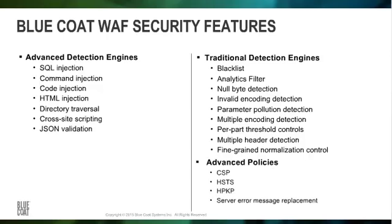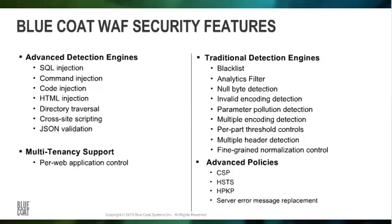With the CPL framework, we can offer advanced policies in addition to the provided engines and capabilities. For example, you could write policy to enable content security policy, which is delivered by the browser in a header field and executed by the client. HTTP Strict Transport Security and HTTP Public Key Pinning are also relatively new methods that can be delivered to the client as a header field. It is very easy to introduce these new functionalities with the ProxySG by writing just a few lines of CPL. In addition, we can replace server error messages with custom error messages, and with multi-tenancy support we can deliver per-web-application control.